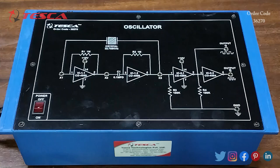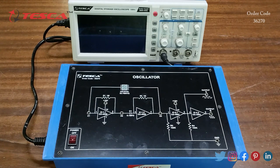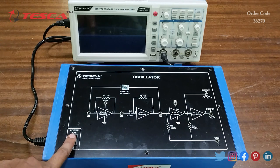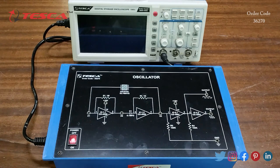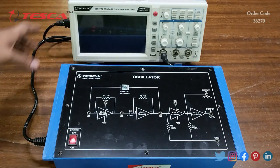Now we are going to perform an experiment on the kit. The experiment is to study a crystal oscillator using a CMOS IC with a crystal of frequency 32.768 kilohertz. For that, firstly we will switch on the kit, and now we will switch on the DSO, as this experiment requires a DSO.